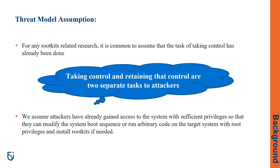For designing the threat model, we should consider that the major function of rootkits is to retain control of a compromised victim system without being detected. We would like to emphasize that taking control and retaining that control are two separate tasks to attackers, and both of them are equally critical. For any rootkit-related research, it is common to assume that the task of taking control has already been done — in other words, attackers have already compromised a victim system.